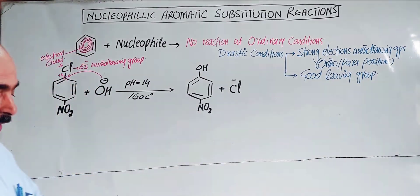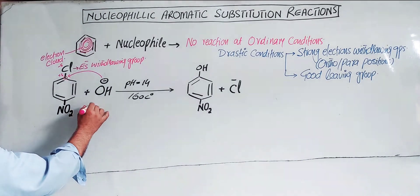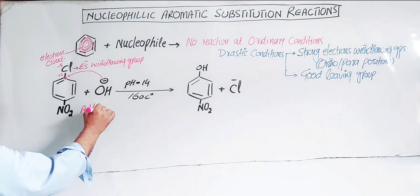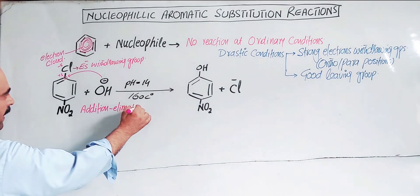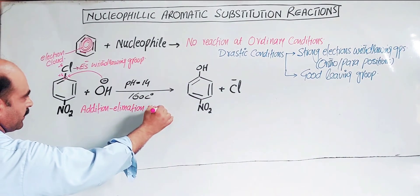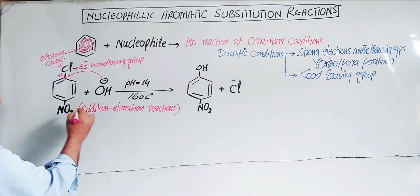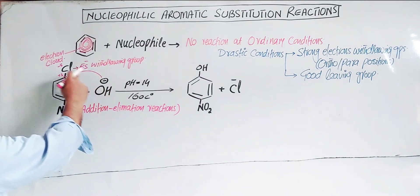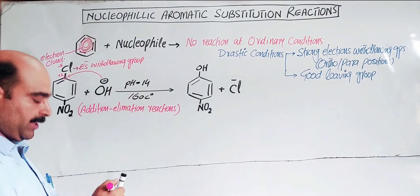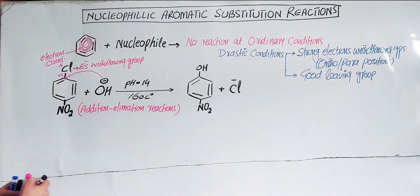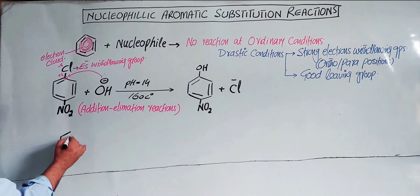The direction of this reaction follows an addition-elimination mechanism. First, the nucleophile (OH⁻) adds to the ring — that is the addition step. Then the chloride ion is eliminated — that is the elimination step. So it is an addition-elimination mechanism: addition of nucleophile, then elimination of chloride ion.